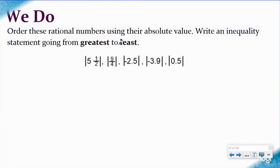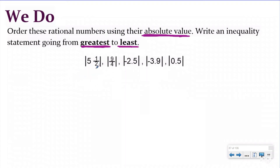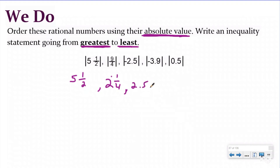Let's take a look at a we do problem. We want to order these rational numbers using their absolute value — not their actual value, but how far away from zero they are — from greatest to least. I'm going to write down the absolute value of each. The absolute value of five and a half would be five and a half. The absolute value of nine fourths would still be nine fourths — I'll change this to a mixed number — so that would be two and one fourth. The absolute value of negative 2.5 would be two and five tenths.